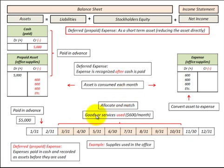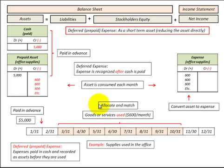So what is a prepaid asset? If we look at a timeline here, from March through October, we use some goods or services at $600 per month. For example, they might have been supplies used in the office or some consumable item like that. What we need to do is allocate those goods or services to the expense on the income statement. We paid for these expenses up front, which is what we would call a prepaid asset.